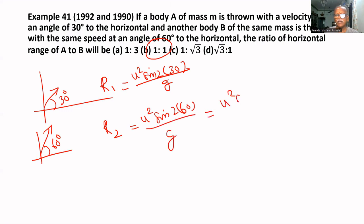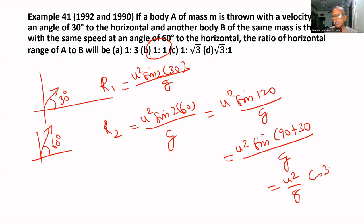This equals U² sin(120°) divided by G, which equals U² sin(90° + 30°) divided by G, which equals U² divided by G times √3 by 2.